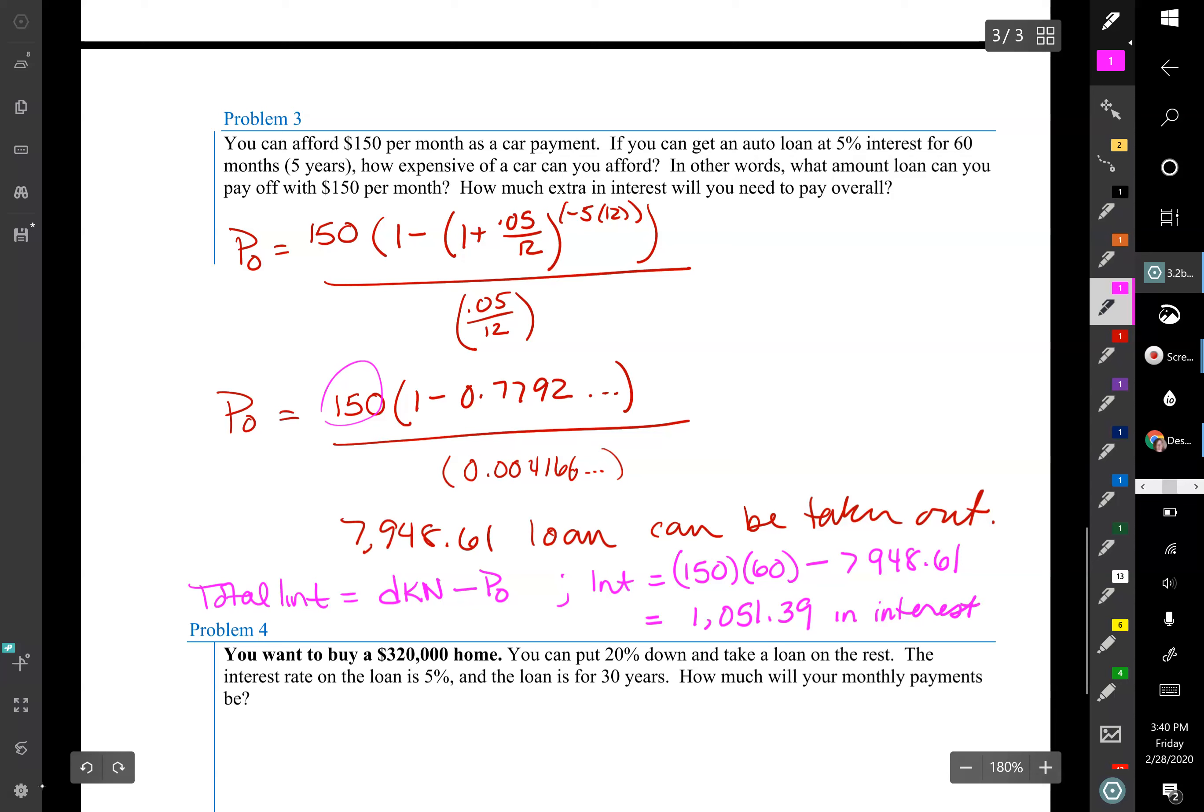So that's how much extra I have to pay, something to think about when you're getting a car. In problem four, you want to buy a $320,000 home. You can put 20% down and take a loan on the rest. The interest rate on the loan is 5%, and the loan is for 30 years. How much will your monthly payments be?